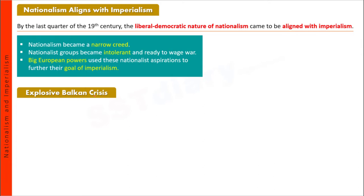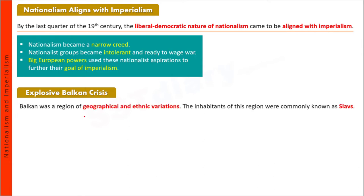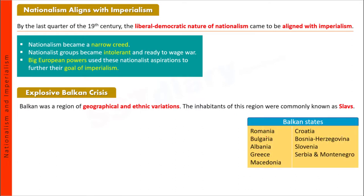Balkan क्षेत्र की स्थिति बहुत विस्फोटक होती जा रही थी क्योंकि Balkan क्षेत्र में geographical and ethnic variations थे — different ethnic groups में लोग divided थे। यहाँ के निवासी — inhabitants — Slav कहलाते थे। Slav जाति समूहों के Balkan क्षेत्र में आज के Romania, Bulgaria, Albania, Greece, Macedonia, Croatia, Bosnia, Herzegovina, Slovenia, Serbia और Montenegro आते हैं।